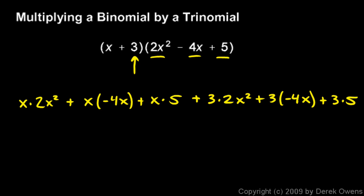And I'll simplify each of those terms and then combine like terms. So over here, x times 2x squared is 2x cubed. And then I have x times negative 4x. That's going to be minus 4x squared. And then this is a plus 5x.